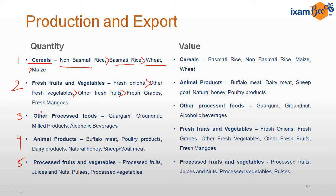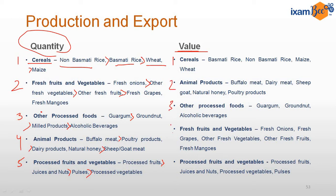For processed foods, maximum export is of guar gum, then groundnut, then milled products, then alcoholic beverages. For animal products: buffalo meat, poultry products, dairy products, natural honey, sheep and goat meat. For processed fruits and vegetables: processed fruits first, then juices and nuts, then pulses, then processed vegetables. Value-wise, the highest value exported is cereals, then animal products, then other processed foods, then fresh fruits and vegetables, then processed fruits and vegetables.